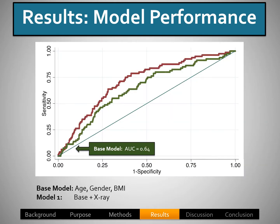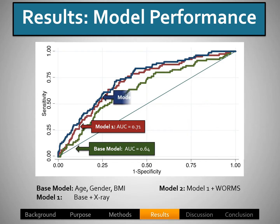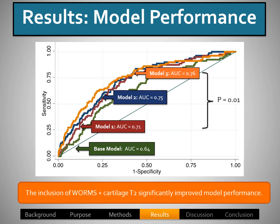For model performance, the base model had an AUC of 0.64. Model 1, with baseline and x-ray, had an AUC of 0.71, which is significantly different from the base model. When we added MRI morphology, we had an AUC of 0.75. And when we added T2 values with MRI morphology, we did see a significant improvement from model 1, which just had KL scores.